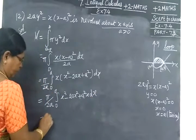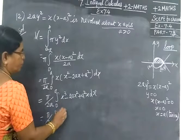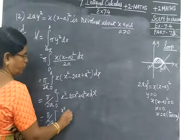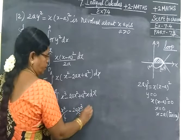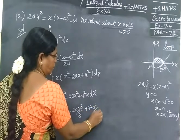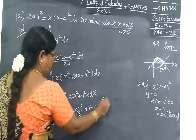Now you integrate: π by 2A, x⁴/4 minus 2A x³/3 plus A² x²/2. Now the limit is 0 to A.